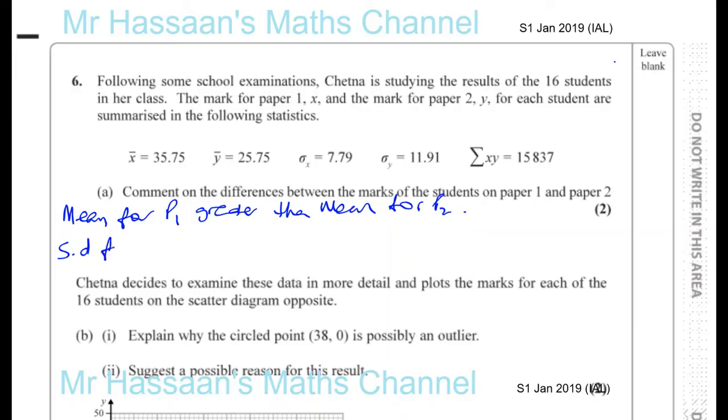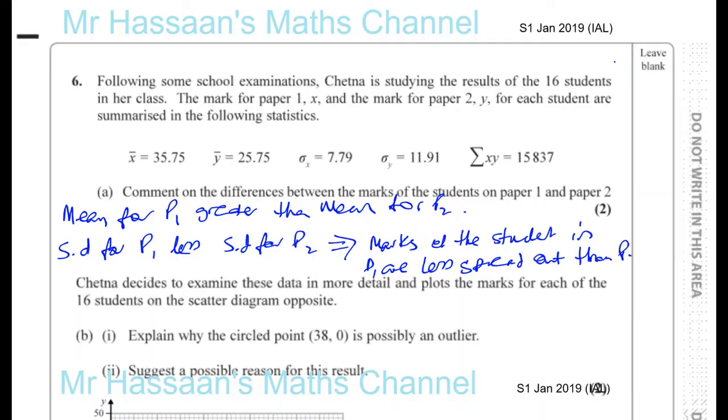You can also mention something about the standard deviation. The standard deviation for paper 1 is less than the standard deviation for paper 2. So we can say that this means that the marks of the students in paper 1 are less spread out than paper 2. The mean for paper 1, on average, they did better than paper 2.